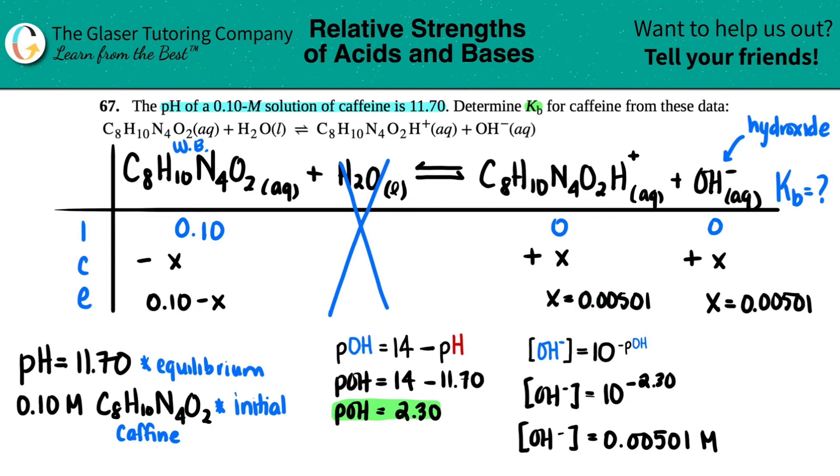So I have two of my equilibrium values. So maybe I'll highlight these. And I'll highlight this one. Now I go over here. This is 0.10 minus x. Well, we just found out that x was 0.00501.